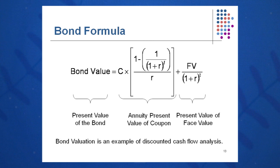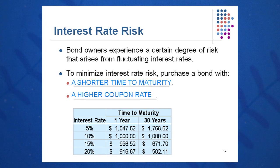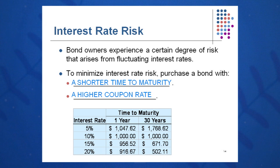There is some interest rate risk when we buy a bond — we're holding it for 30 years and interest rates will go up and down. One way to minimize interest rate risk is to have a shorter time to maturity and keep your coupon value up. A shorter TTM and higher coupon rate minimize your interest rate risk. For example, with a 30-year bond, if rates drop to 5% the bond could be worth $1,768, but if rates rise to 20%, it may only be worth $502. Be careful with long-term bonds and pay attention to interest rates.